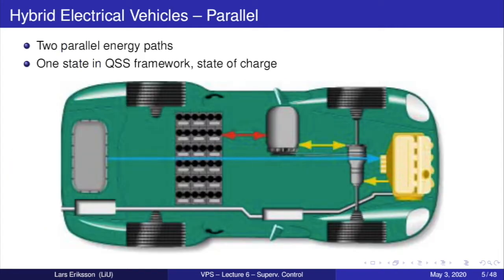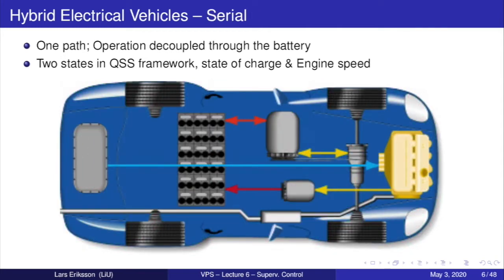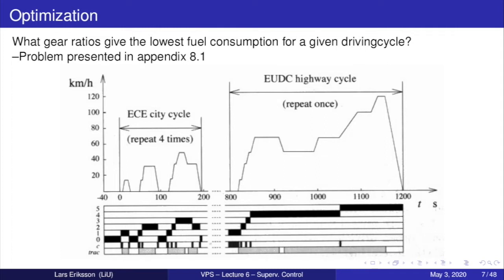You have worked now with a parallel hybrid where you have two parallel energy paths. You have one degree of freedom, that's one state, namely state of charge of the battery, and we can use that state of charge to optimize the fuel economy of the vehicle. You've also worked with the serial hybrid where the operation of the engine is decoupled through the battery and power electronics. We have two states in the QSS framework: state of charge and engine speed. And as you know now from hand-in assignment number two, this is a quite more difficult problem to solve because we have more degrees of freedom.